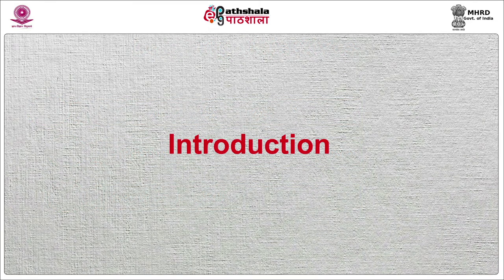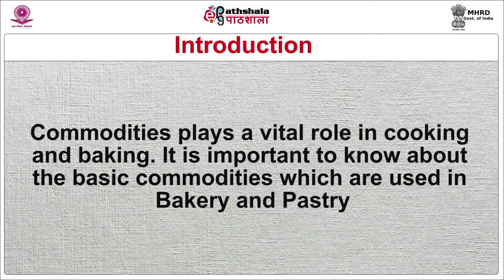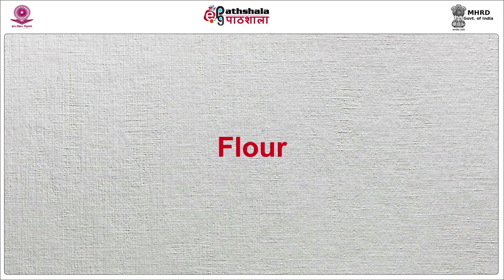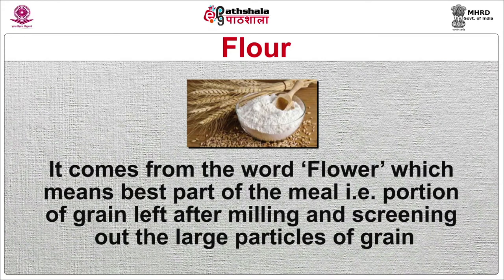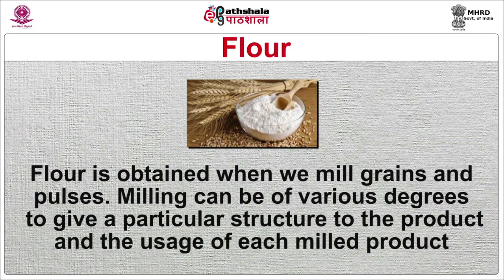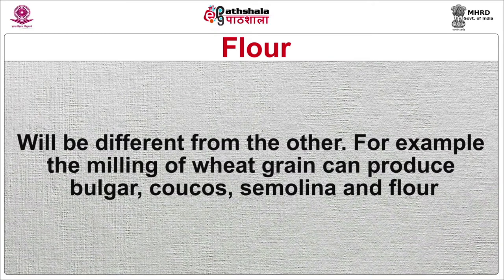Commodities play a vital role in cooking and baking. It is important to know about the basic commodities used in bakery and pastry. The first one is flour. It comes from the word 'flour' which means the best part of the grain — the portion of grain left after milling and screening out the large particles. Flour is obtained when we mill grains and pulses. Milling can be of various degrees, giving a particular structure to the product. For example, milling of wheat grain can produce bulgur, semolina and flour.